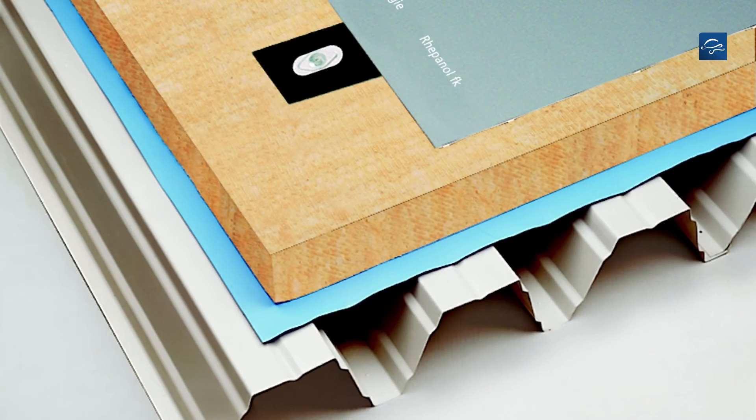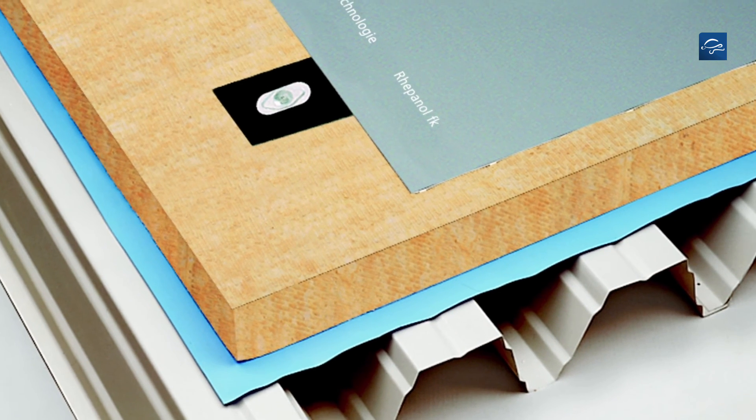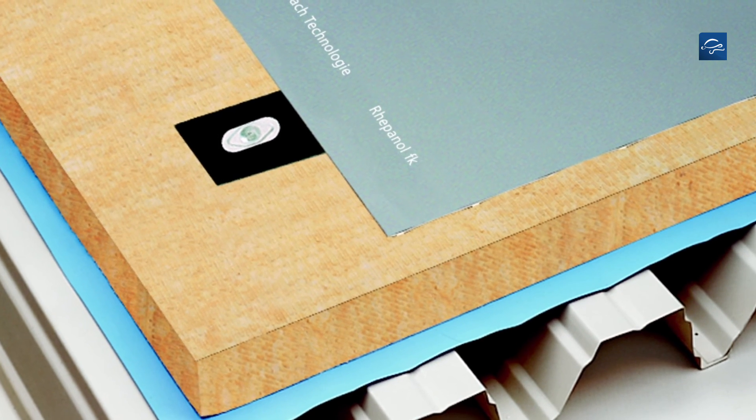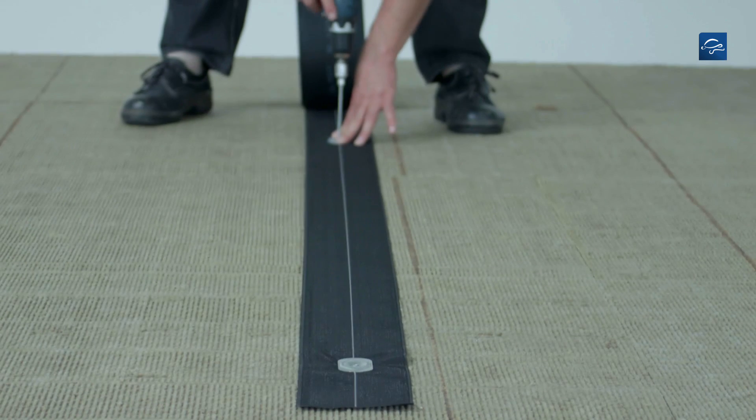With supporting decks of profile steel decking, the GripFix strips run perpendicular to the span direction of the sheets or boards.